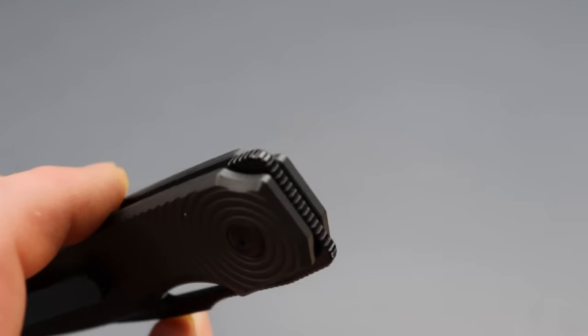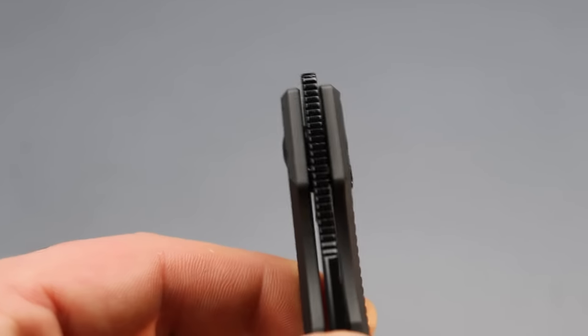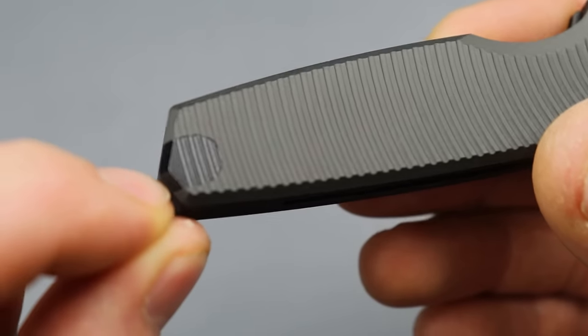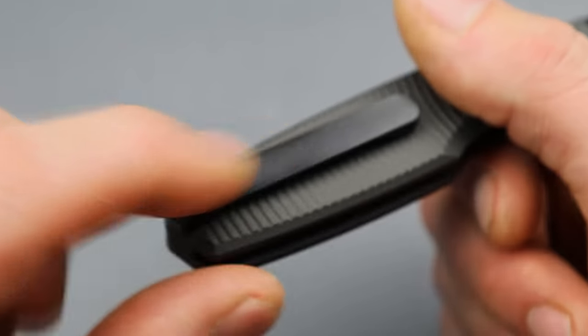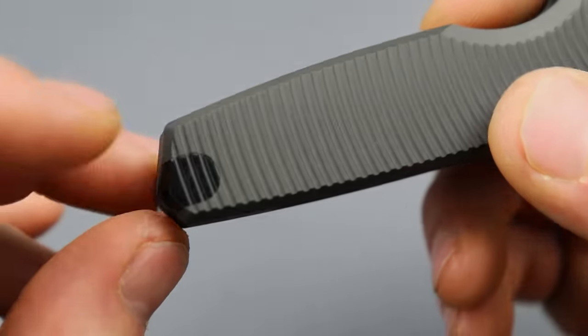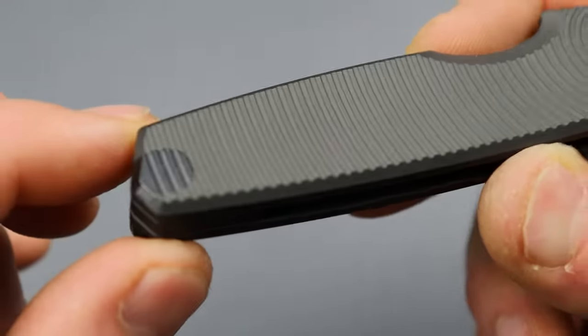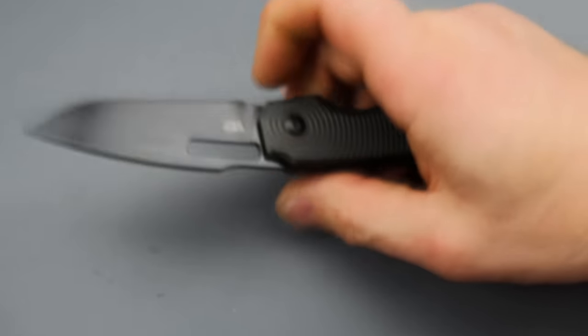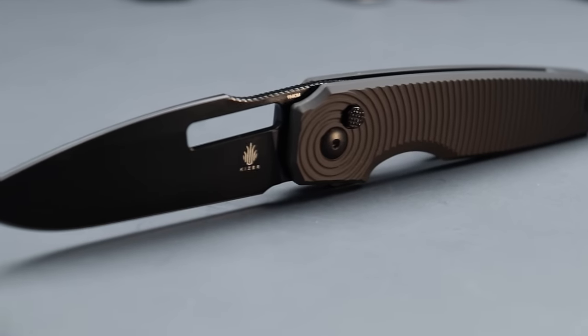And, you know, the shape of it and everything just works really good for EDC. Now, the clip, if you look, they got... The reason why it's a different color is because this is titanium. And this is titanium. And you can see the difference in the coating. That's kind of cool, though. I personally like that. Titanium mill pocket clip. And all of this for under $100 is a great deal, man. And it's well under $100.